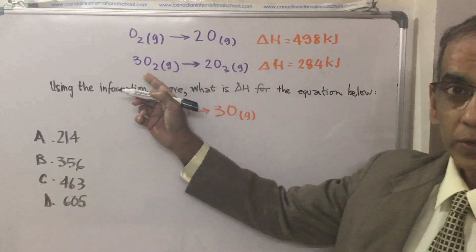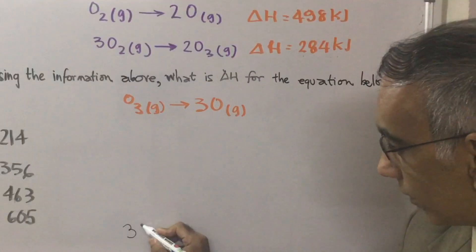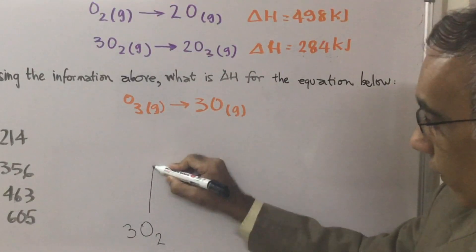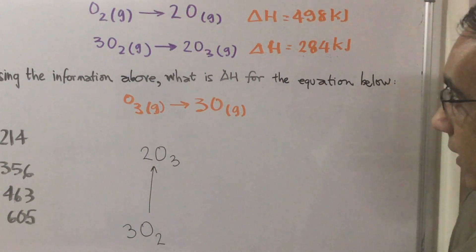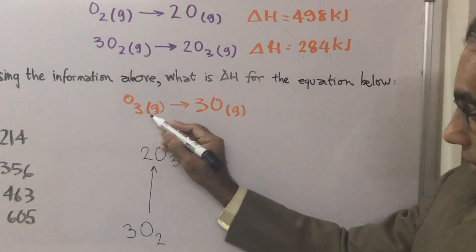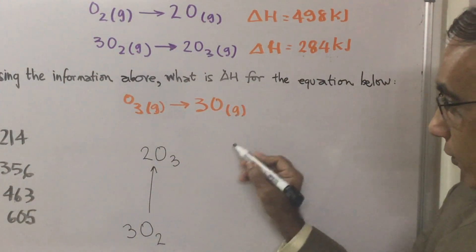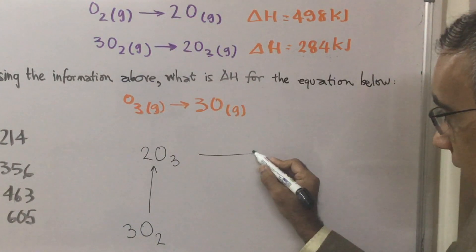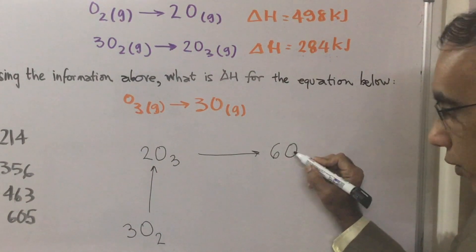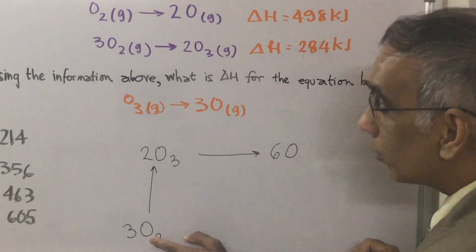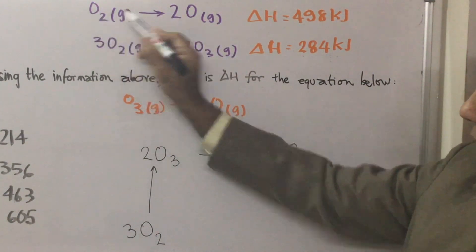So here we see this equation, 3O₂ gas giving 2O₃. So if we write this equation down here, 3O₂ to form 2O₃. And bearing in mind that this is the equation that we're trying to solve for, O₃ gas to give 3O oxygen atoms. If we have 2O₃, then we're going to get 6O over here. And if we have 3O₂, then we're multiplying this by 3.